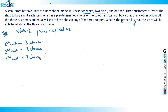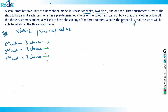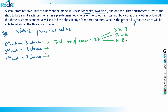All three customers have three choices each, so the total number of cases is 3 × 3 × 3 = 27. These 27 cases include combinations like black-black-black, black-white-red, white-black-red, white-black-black, and so on.